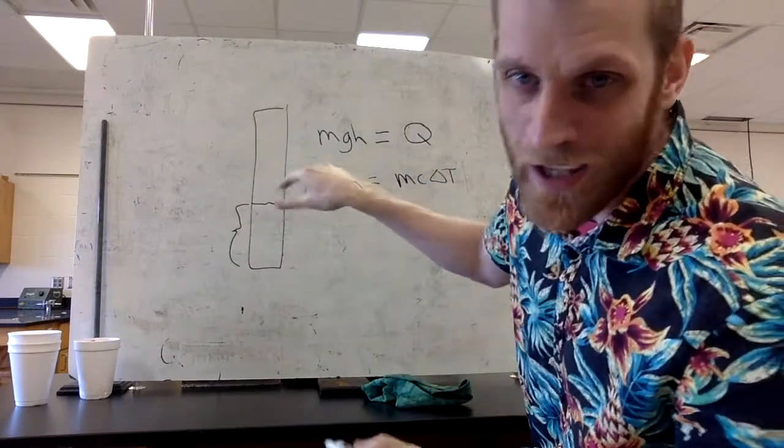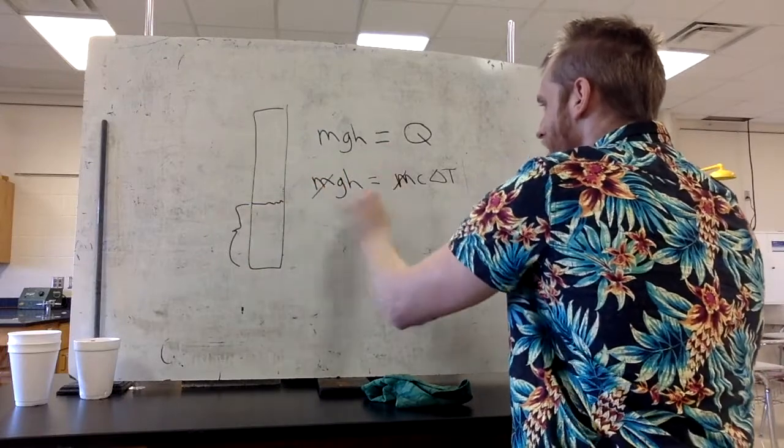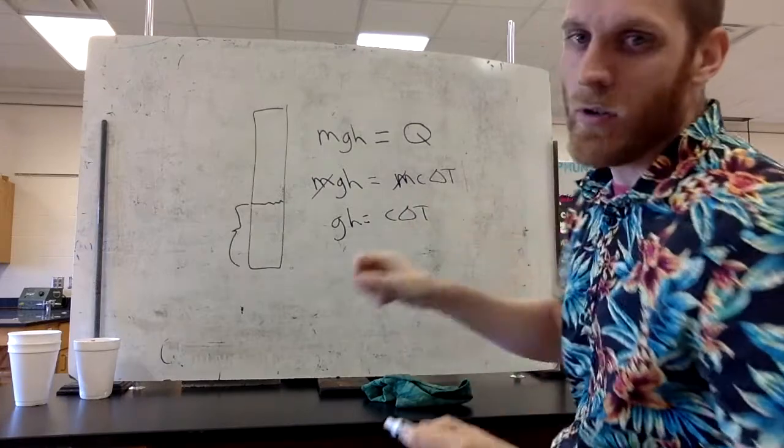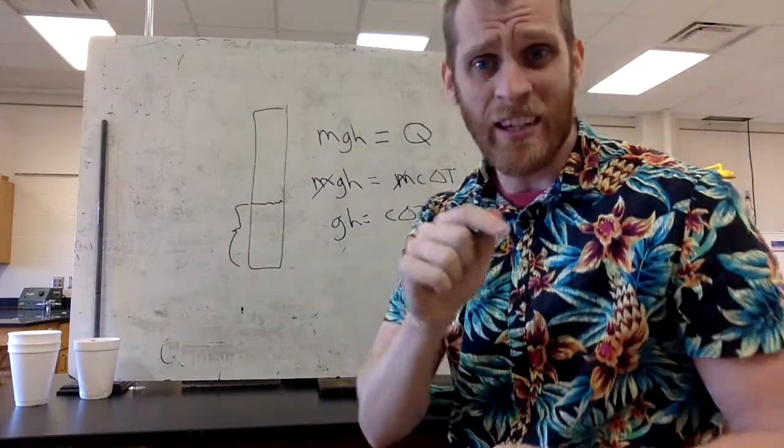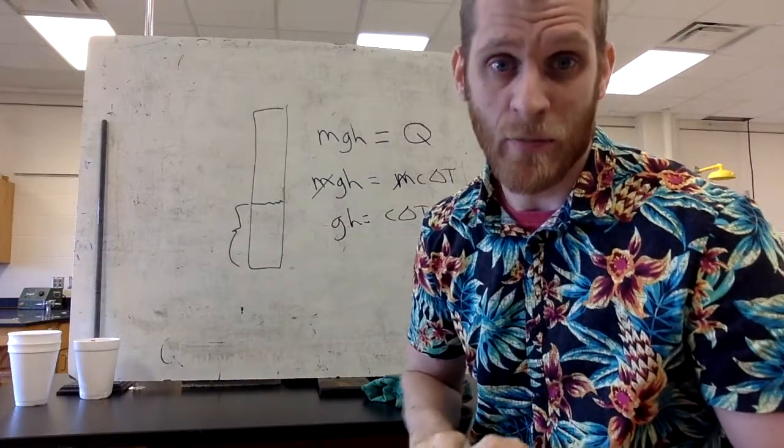So really, it doesn't matter how much sand you have in there, because there's mass on both sides, the mass of the sand cancels out, so g times h equals c times delta T. What I wanted to do is I'm just going to figure out what is the specific heat of sand based on the temperature change.